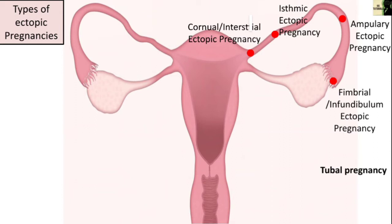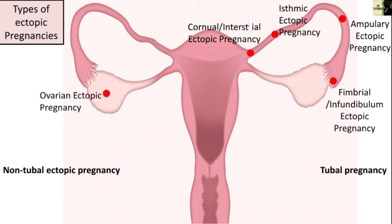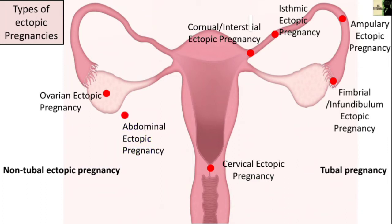Non-tubal ectopic pregnancy includes abnormal pregnancies established in other areas: in the ovary, called ovarian ectopic pregnancy; in the cervix, called cervical ectopic pregnancy; or in the abdominal region, known as abdominal ectopic pregnancy.